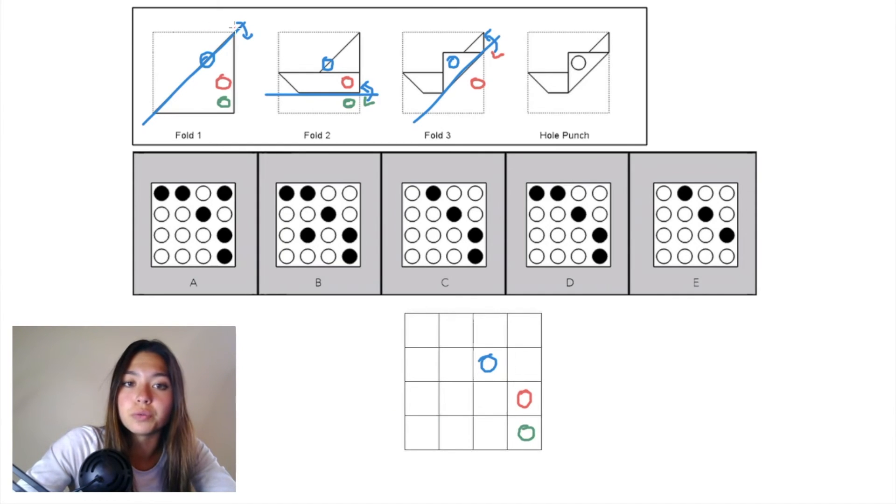Lastly, we'll undo fold 1. All of these hole punches need to be reflected back up over that diagonal plane. We'll draw that diagonal plane from fold 1 in our grid.